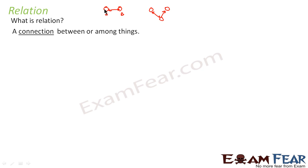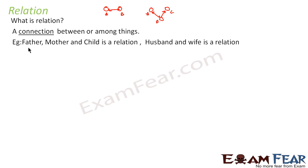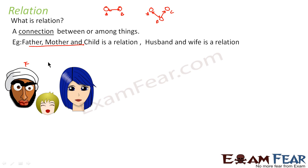For example, object A and object B have a relation. Or objects A, B, and C have a relation. Let's look at some real-life examples. Father, mother, and child is a relation. This guy is father, this lady is mother, and this is a sweet child. There is a relation between these three. The cute baby is the daughter of the father, and this lady is the mother of this kid. So there is a relation between these three.